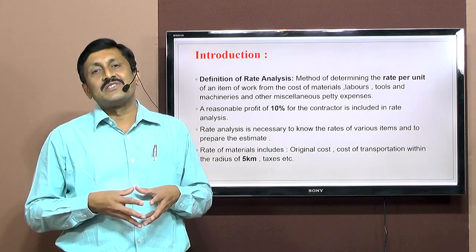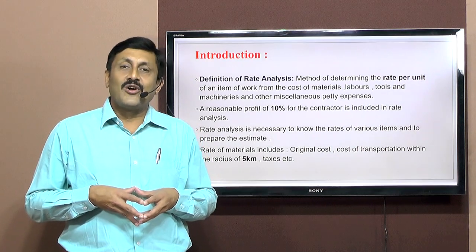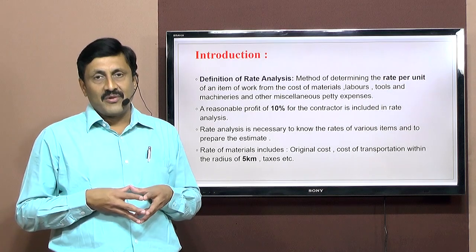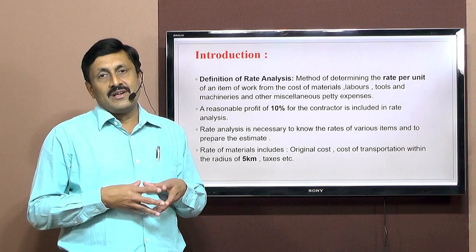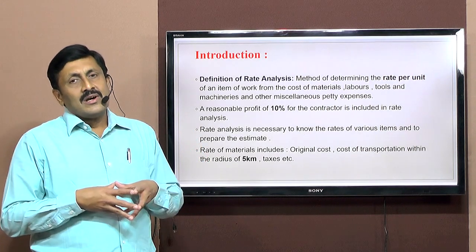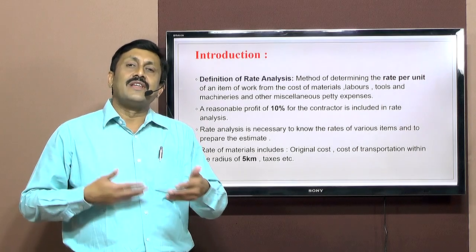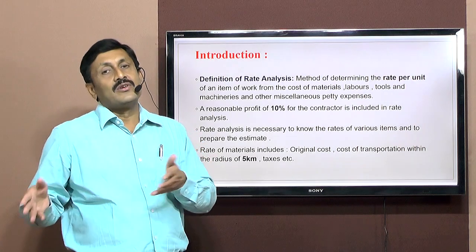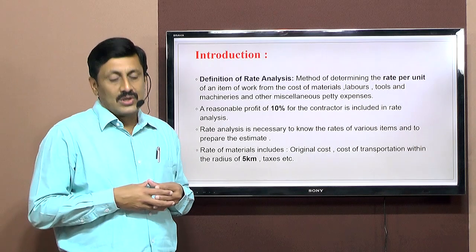Because if the contractor does not get any benefit from the work after its execution, he will definitely not have any interest in executing that particular job. So the contractor needs to get profit. Usually this permissible profit is 10% of cost of materials, cost of labors, and other petty expenses. Rate analysis is necessary to know the rates of various items of work, with the help of which we can find out item-wise cost, and finally arrive at the total cost of work.